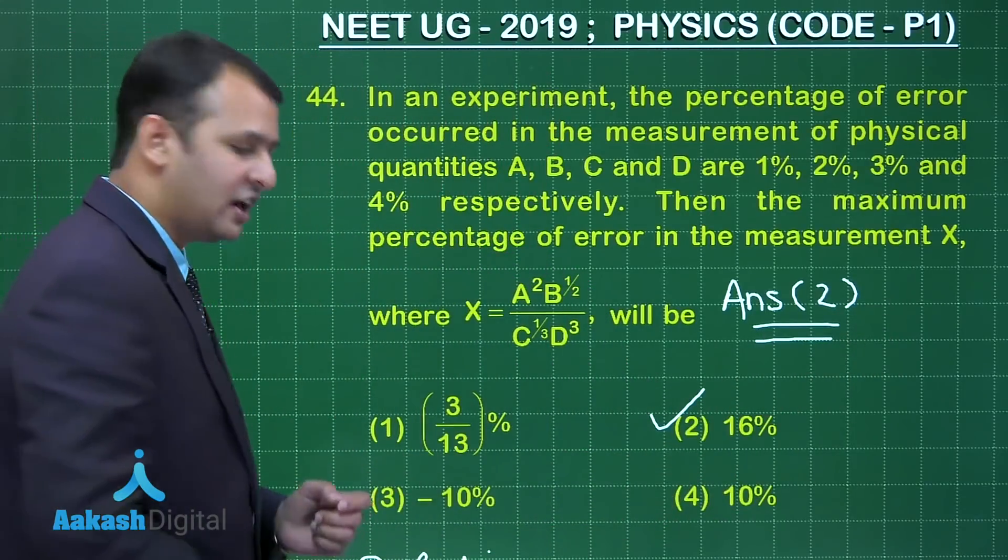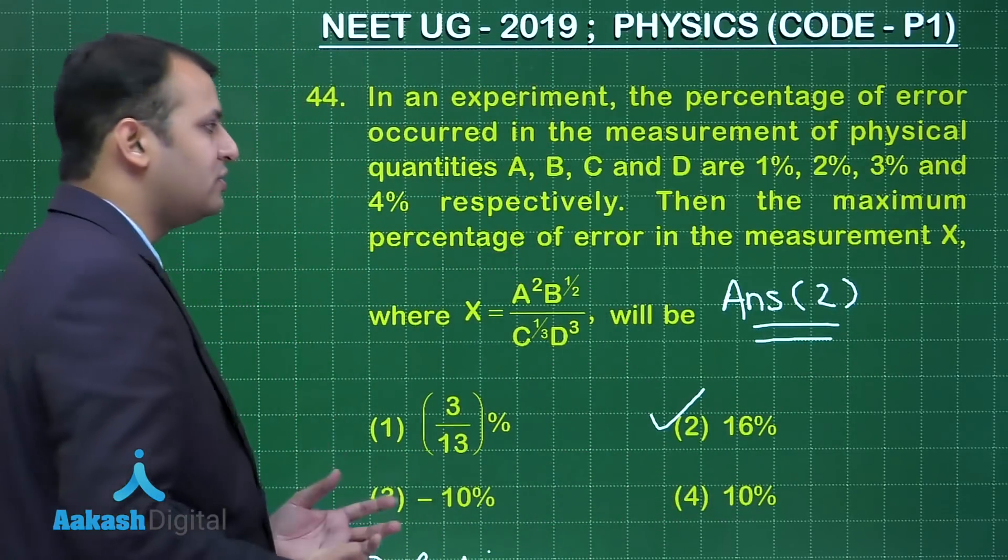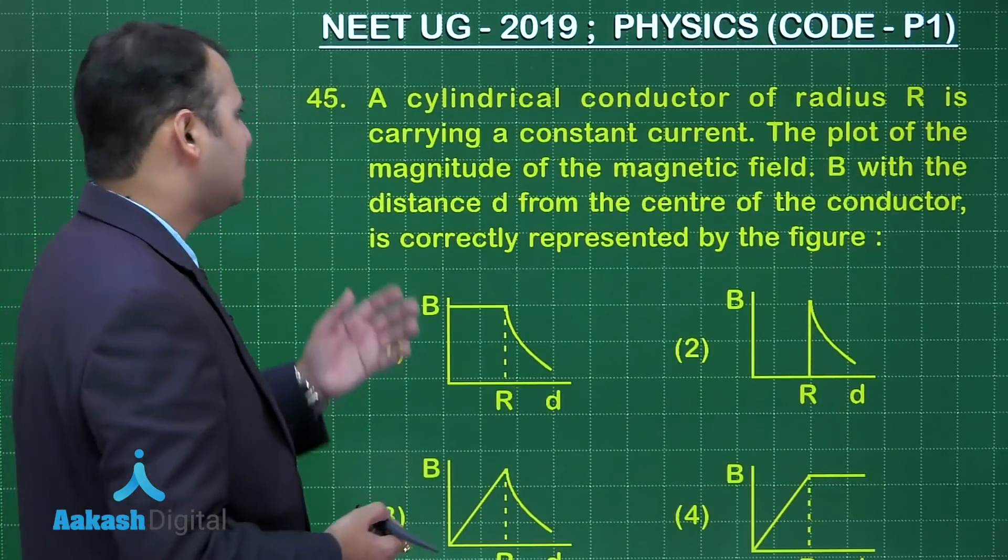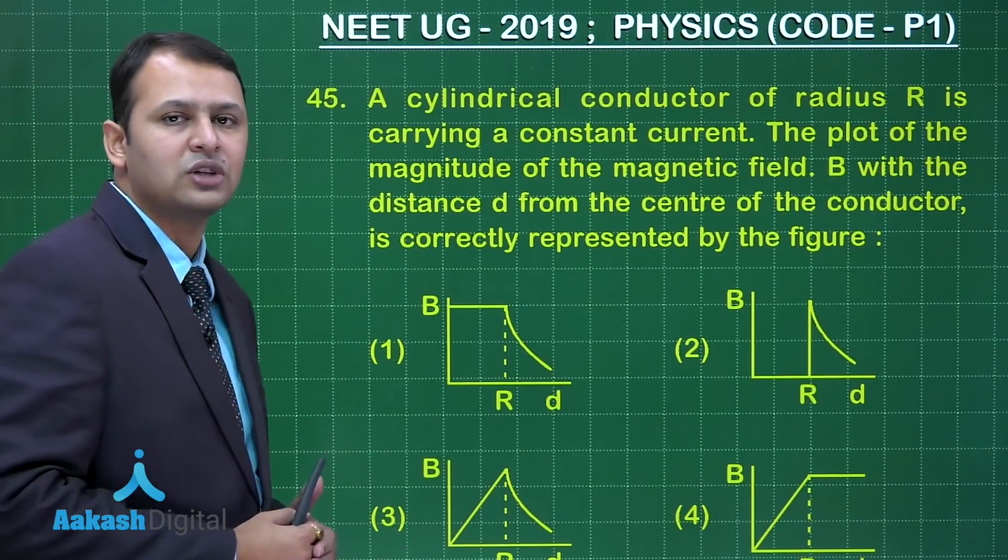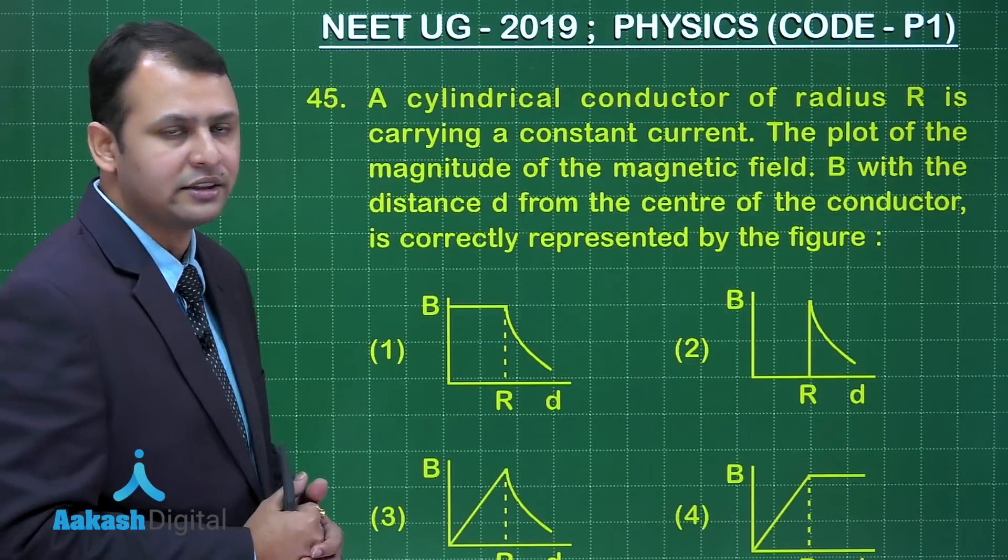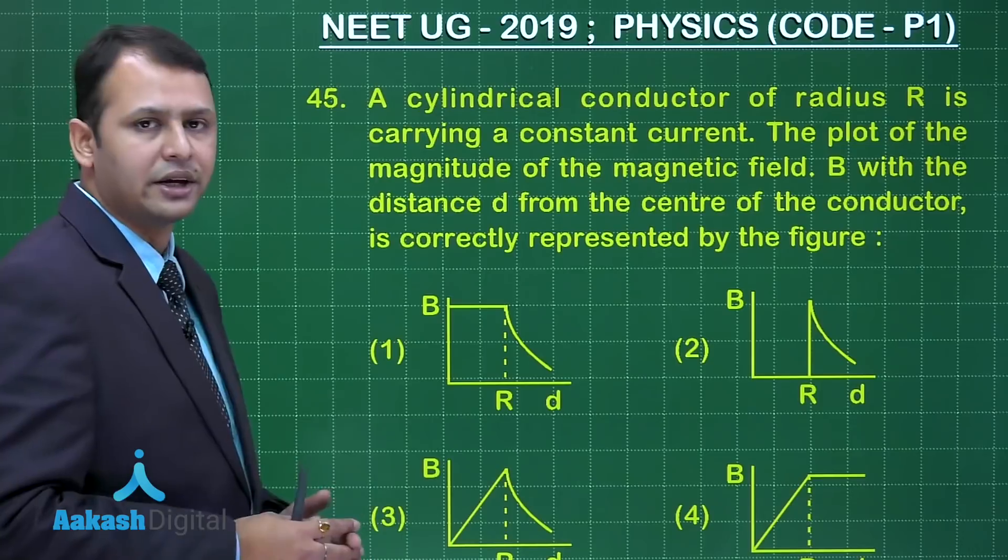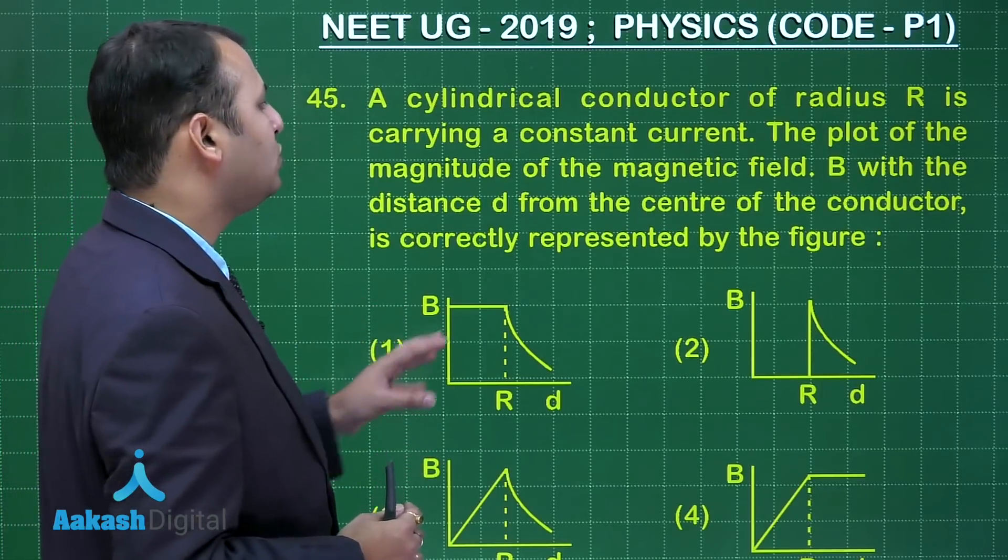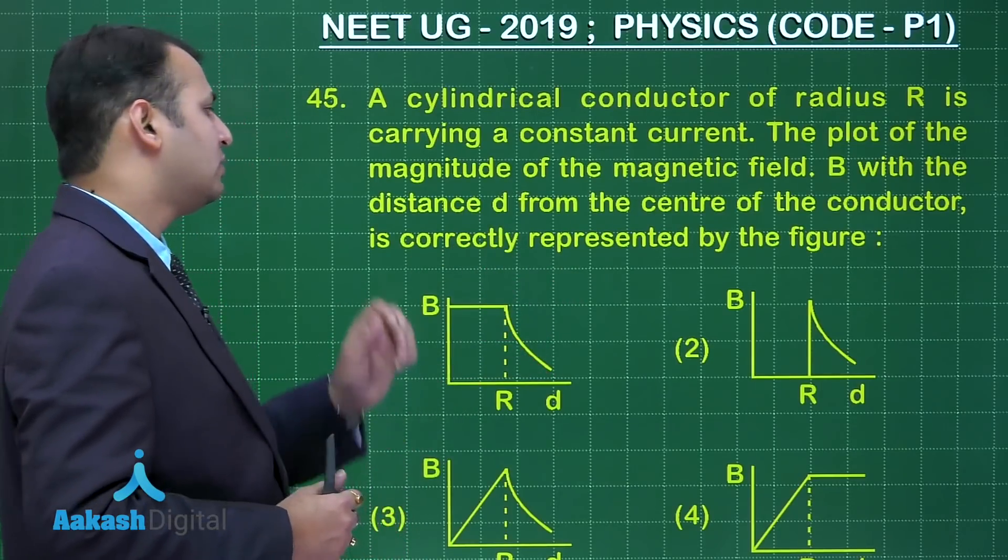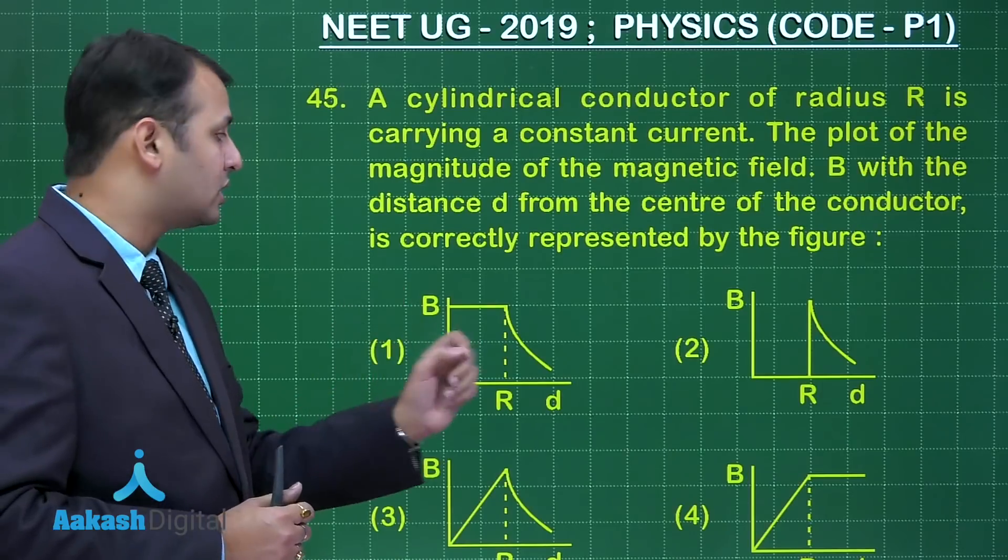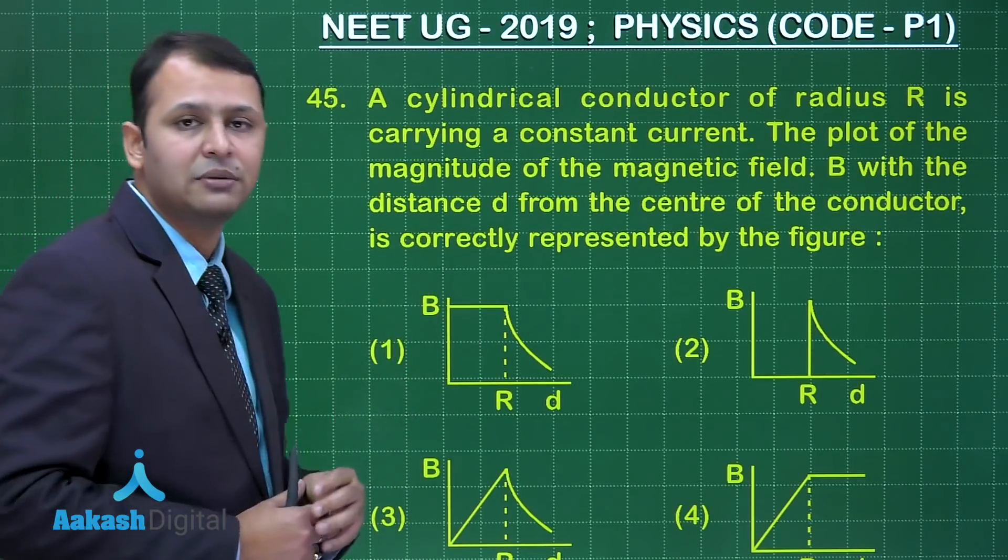Now friends in our journey we have reached to the last question of this paper. Let's see this question. This question you see belongs to chapter of moving charges and magnetism. Here a cylindrical conductor of radius R is carrying a constant current. The plot of the magnitude of magnetic field B with the distance D from the center of the conductor is correctly represented by the figure.